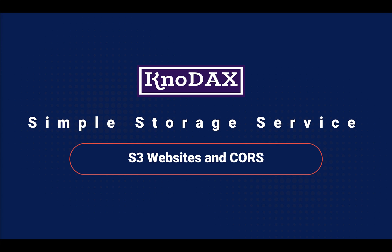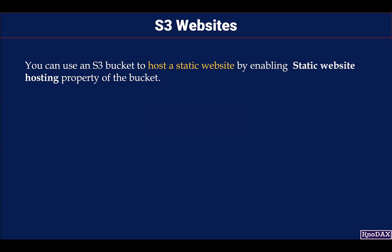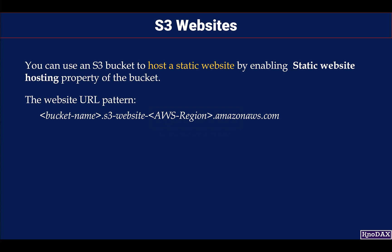Welcome back. In this video we will learn about S3 websites and CORS. You can use an S3 bucket to host a static website and have it accessible via the internet. The website URL pattern is: bucket-name.s3-website.aws-region.amazonaws.com or bucket-name.s3-website-aws-region.amazonaws.com.